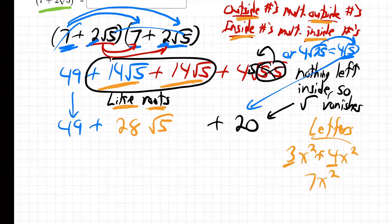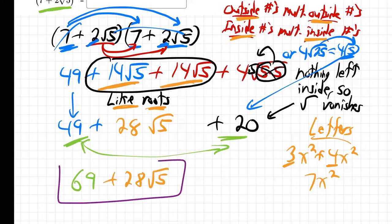So the rules for letters are the same as roots. You can only add letters that are like. And in such cases, you just add the numbers in the front. You don't mess with the powers. And now, 49 and 20, what do these add to be? 69. Because they're just plain old numbers. Bring down the 28 root 5. And we're done right there. That's our final answer.